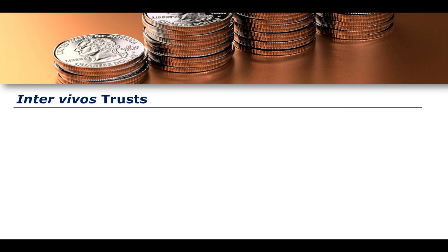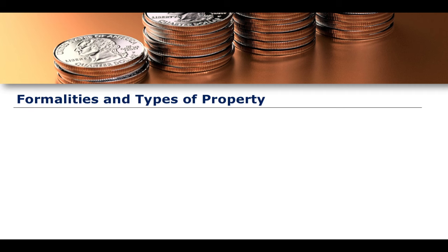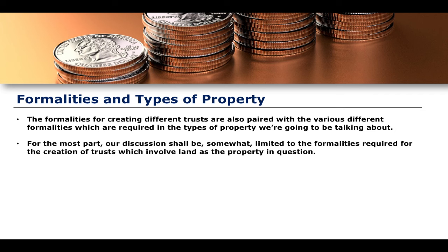Not only do we have to think about formalities in relation to the type of trust — testamentary versus inter vivos — but we also have to make clear that there are different types of property for which different formalities apply. The formalities for creating different trusts are paired with the various different formalities required for the types of property involved. Our discussion will be focused significantly on the formalities required for trusts which involve land as the property in question. Land is the most complicated, with the most debate, conversation, and legal principles attached to it, so we will spend a lot of time on the creation of trusts for land.